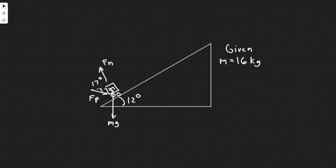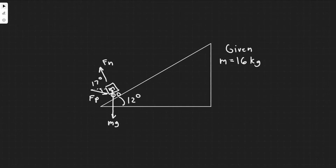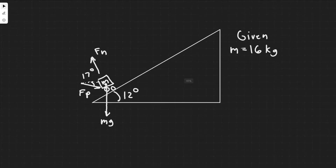In this problem, a grocery cart with mass 16 kilograms is being pushed at a constant speed up a flat 12-degree ramp by a force F_p which acts at an angle 17 degrees below the horizontal. We need to find the work done by each of the forces mg, F_n, and F_p on the cart if the ramp is 15 meters long.